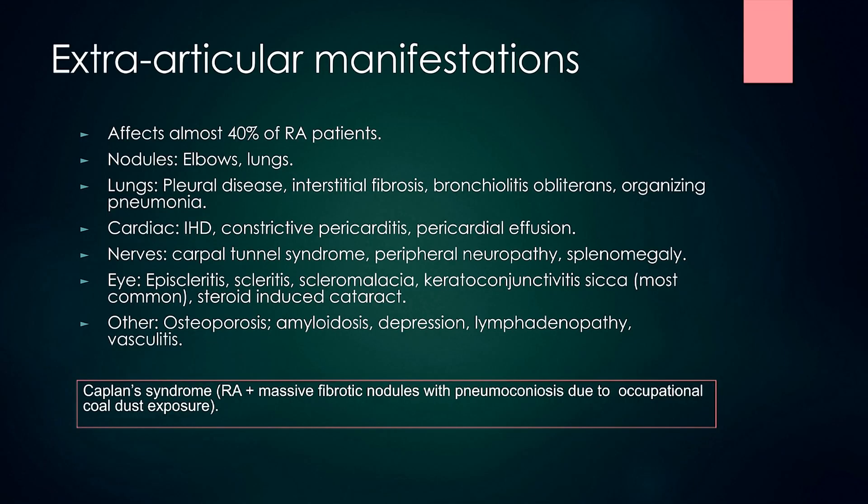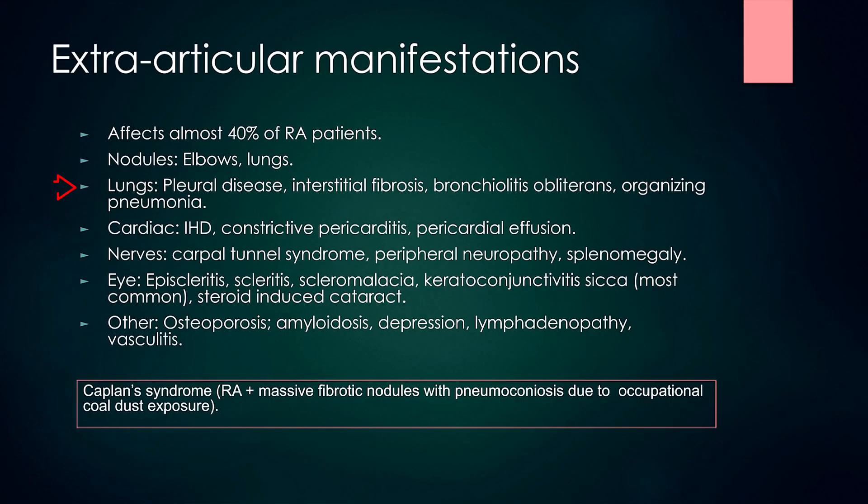Extra-articular manifestations can happen in 40% of RA patients. Nodules can be seen in the elbows, lungs, over the dorsal aspect of the hand and around the ankle joints. In the lungs, it can cause pleural effusion, interstitial fibrosis, bronchiolitis obliterans and organizing pneumonia.